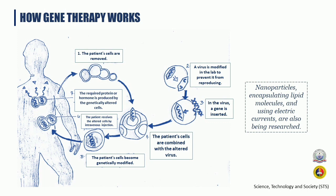These beneficial genes are delivered into cells using vectors, which are carriers. In the majority of cases, the vectors are non-pathogenic modified viruses. Certain bacteria or circular DNA molecules can also serve as vectors, like plasmid DNA. Additional ways for packaging and delivering genetic materials, such as nanoparticles encapsulating lipid molecules and using electric currents, are also being researched.